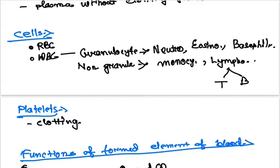Cells present in blood are RBC and WBC. Erythrocytes carry oxygen around the body. Leukocytes include granulocytes and non-granulocytes (also called agranulocytes). Granulocytes include neutrophils, eosinophils, and basophils. Non-granulocytes include monocytes and lymphocytes, with lymphocytes having T cells and B cells.